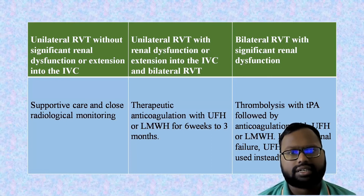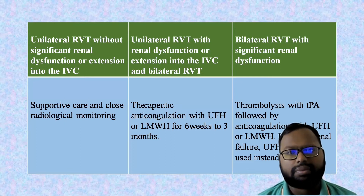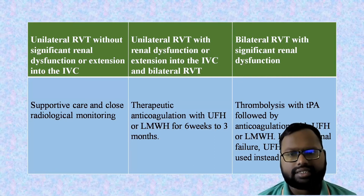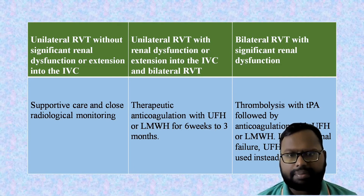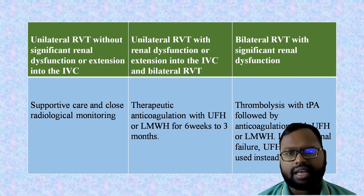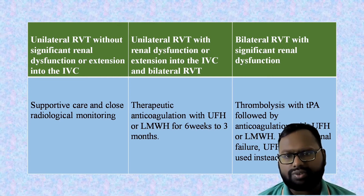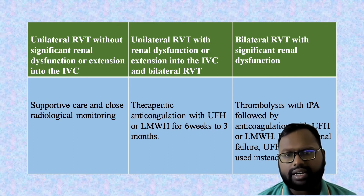If it is unilateral with renal dysfunction or extension into the IVC, or bilateral involvement without renal dysfunction or extension into the IVC, you give therapeutic anticoagulation with unfractionated heparin or low molecular weight heparin for six weeks to three months. If there is bilateral involvement with significant renal dysfunction, first go for thrombolysis with tissue plasminogen activator, followed by anticoagulation therapy.